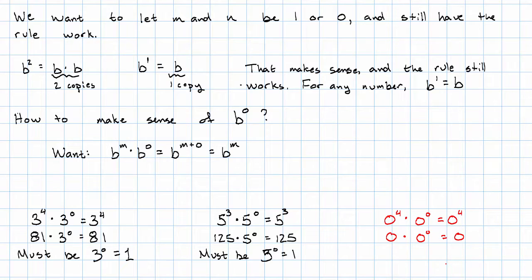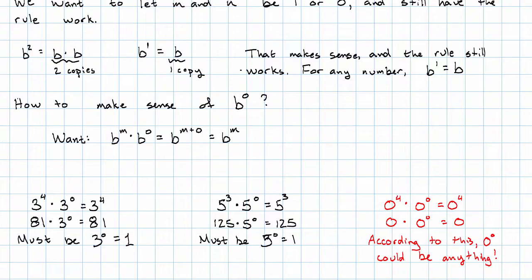But you know what? That doesn't nail down what zero to the zero ought to be. According to that, zero to the zero could be anything at all. And you know, having zero to the zero be one would violate everything we know about all the other powers of zero.